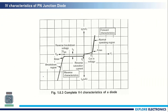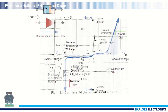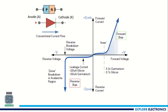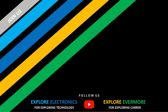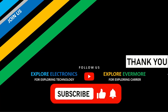This is the complete IV characteristics: the reverse characteristics and the forward characteristics. IF is represented in milliamps and IR in microamps. The cut-in voltage is 0.7 volts for silicon and 0.3 volts for germanium. At the reverse breakdown voltage VBR, there is a knee point with a sharp current increase. The small reverse current is due to minority carriers in the diode. In the next videos, we will see the applications of P-N junction diodes. Thank you.